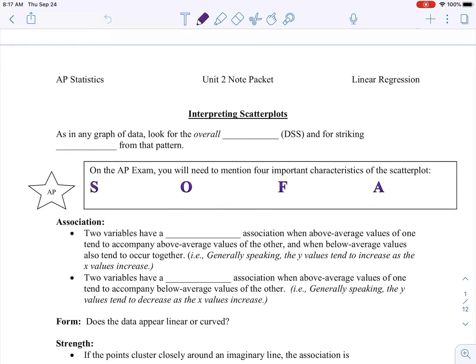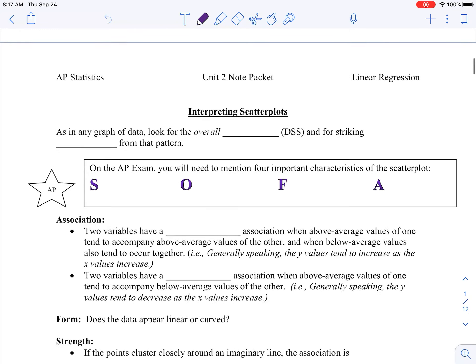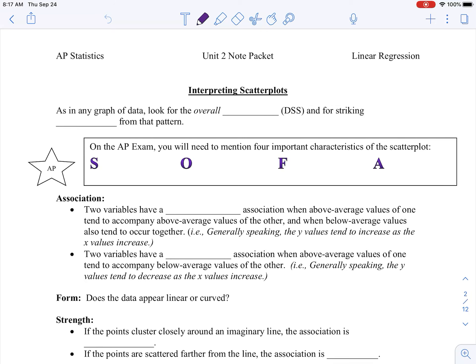So here's going to be our video for page two, the second part of our notes, interpreting scatter plots. Just like when we saw a distribution of one variable, we had to describe it using our C-SOCKs. We have something similar here for describing a scatter plot. So as in any graph, we're going to look at the overall pattern and look for any striking departures from that pattern.